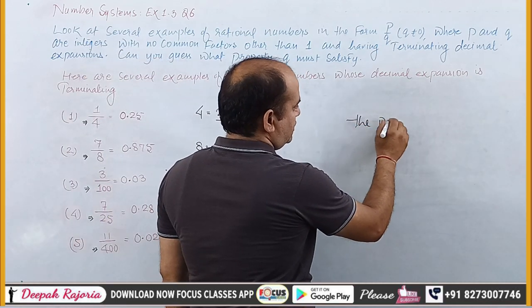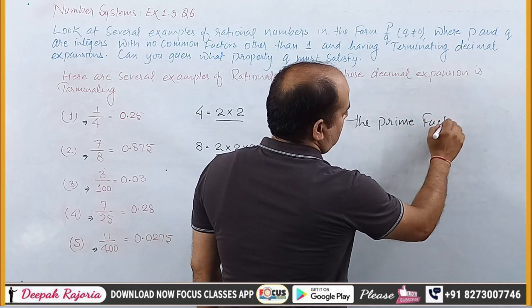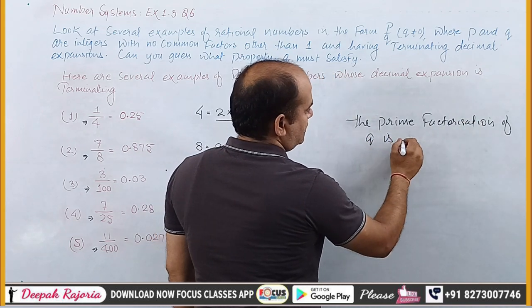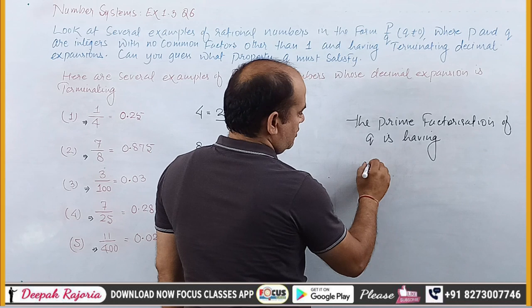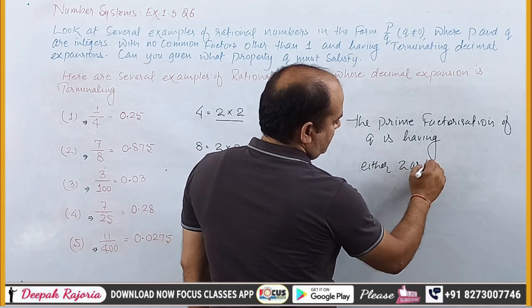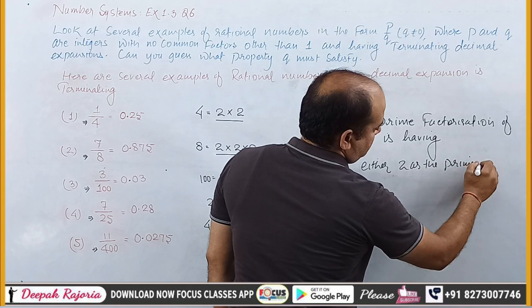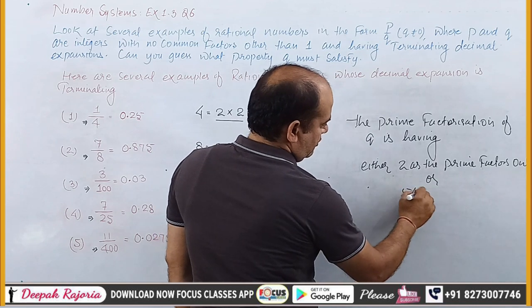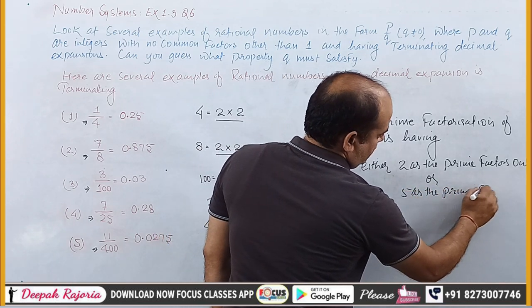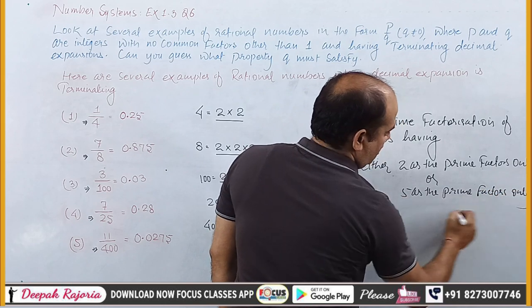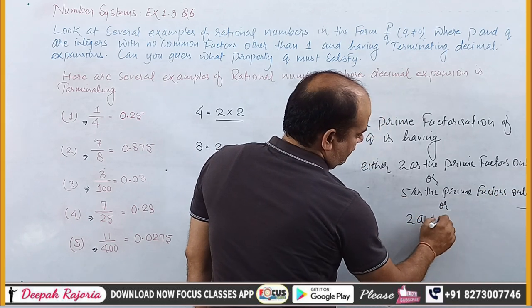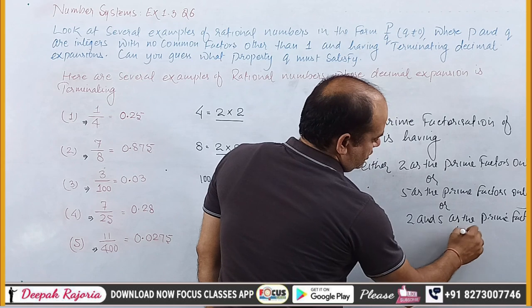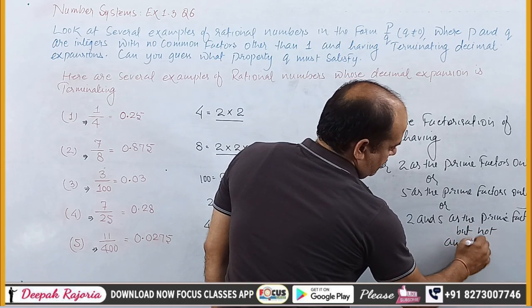So the prime factorization of Q is having 2 as the prime factor only, or 5 as the prime factor only, or 2 and 5 as the prime factors — but not any other prime number.